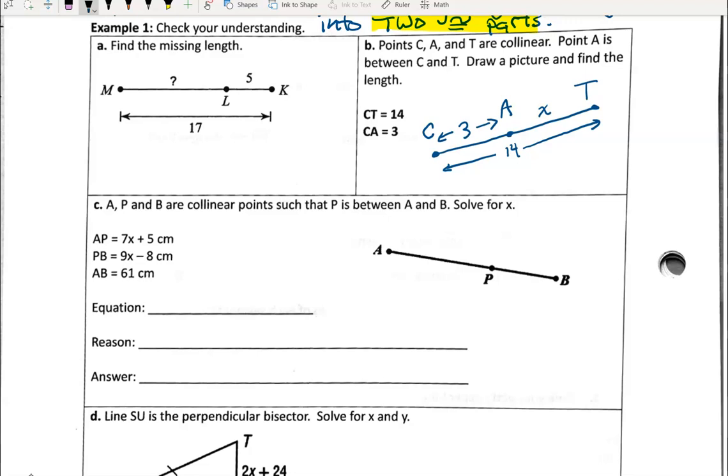I can see in the picture, this is our segment addition postulate, where we add up two smaller segments to get a bigger segment. I have a small segment CA, a small segment AT. If I add those two together, I get the long segment CT, which is 14. So I can write a little equation here. X plus 3 equals 14.